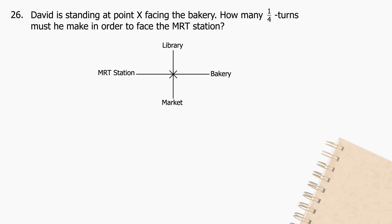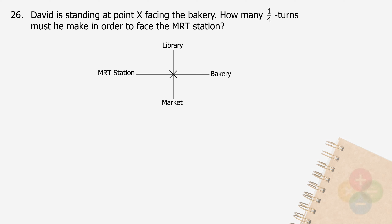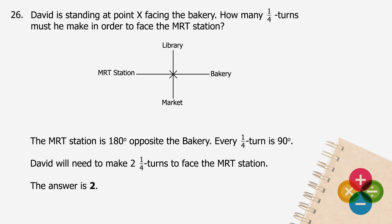Question 26: David is standing at point X, facing the bakery. How many one-quarter turns must he make in order to face the MRT station? The MRT station is 180 degrees opposite the bakery. Every one-quarter turn is 90 degrees. David will need to make two one-quarter turns to face the MRT station. The answer is 2.